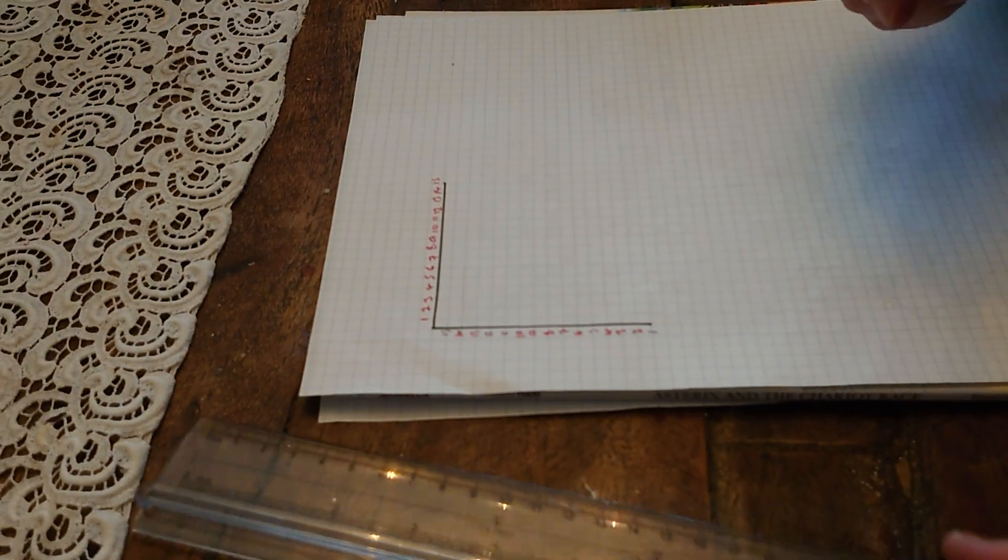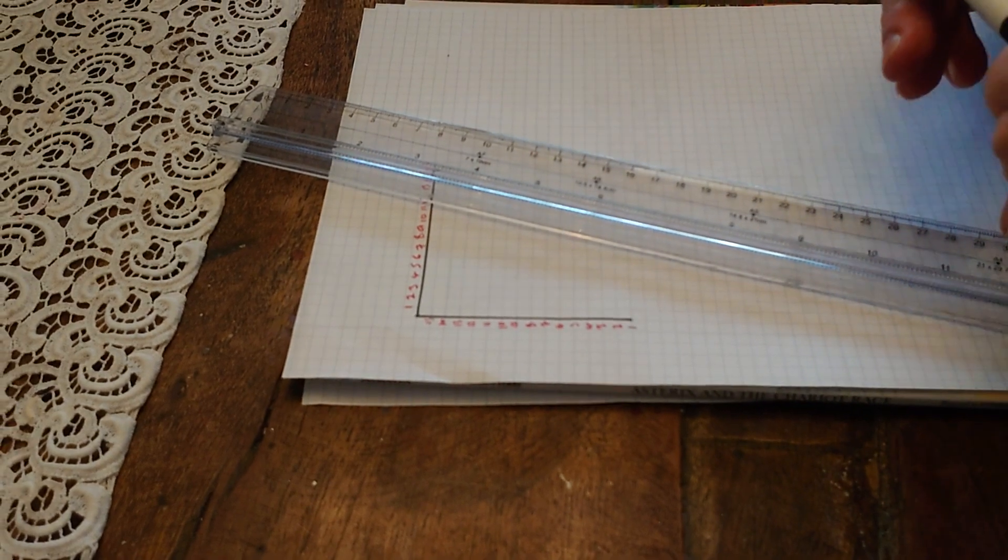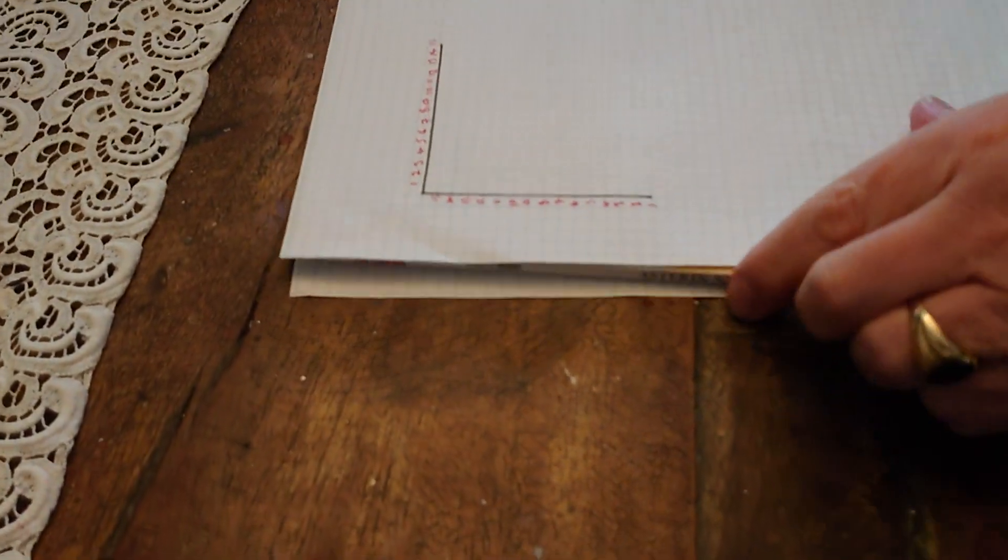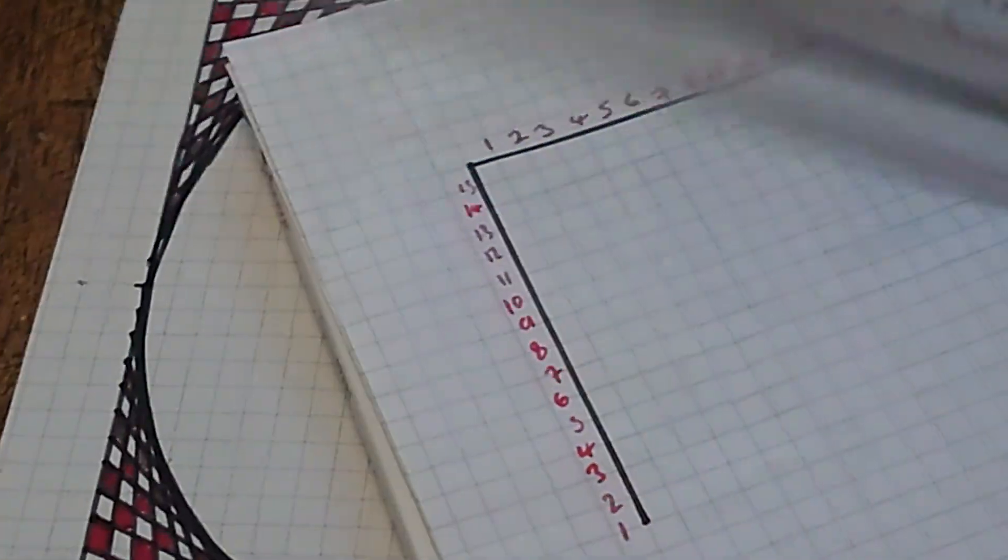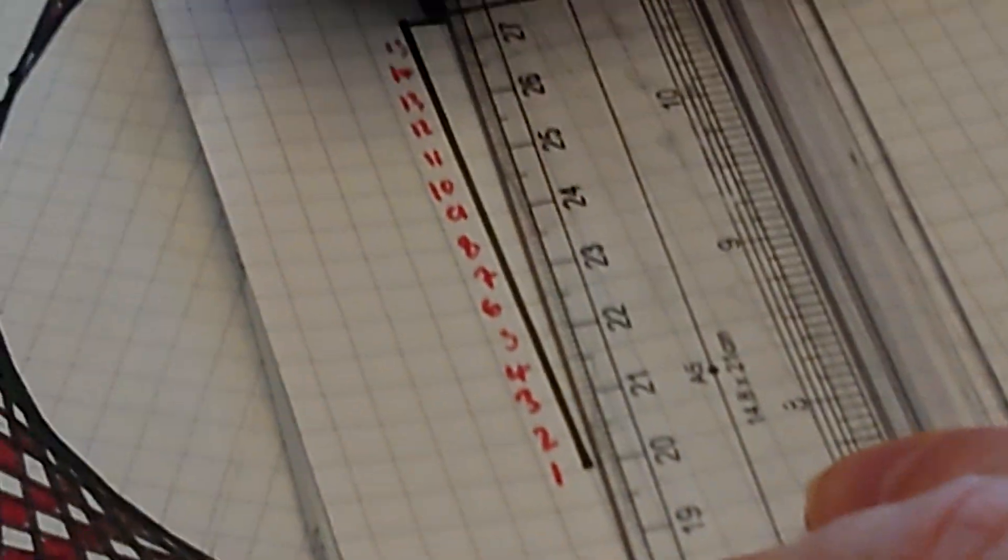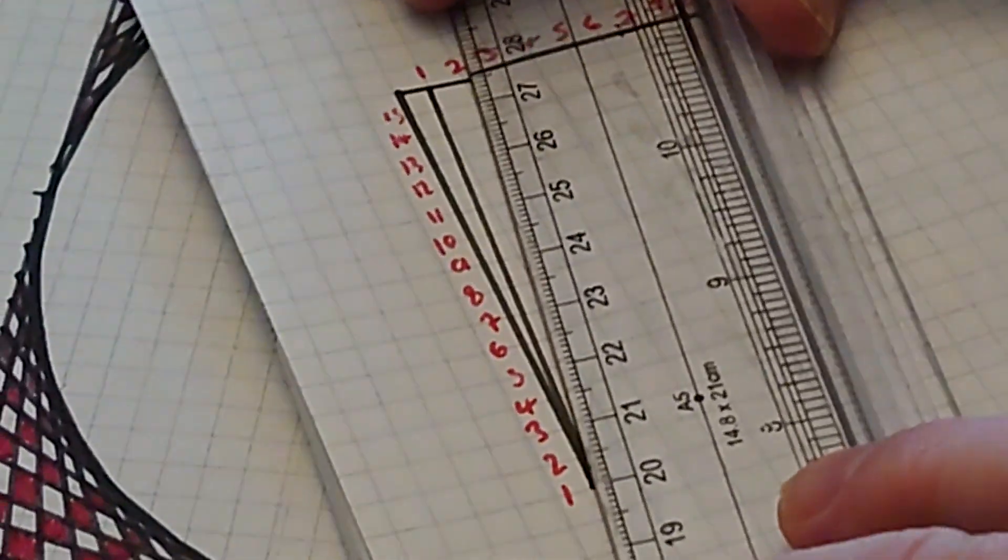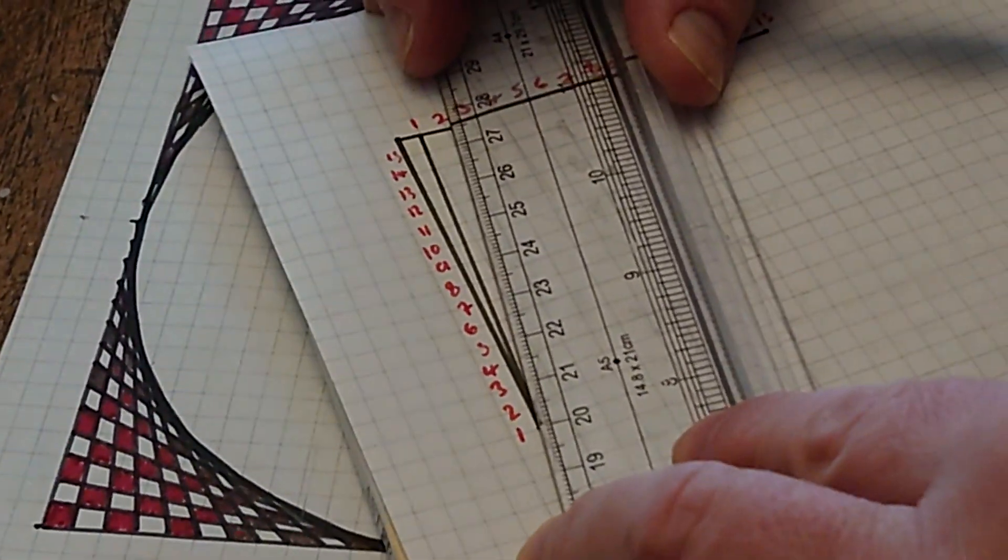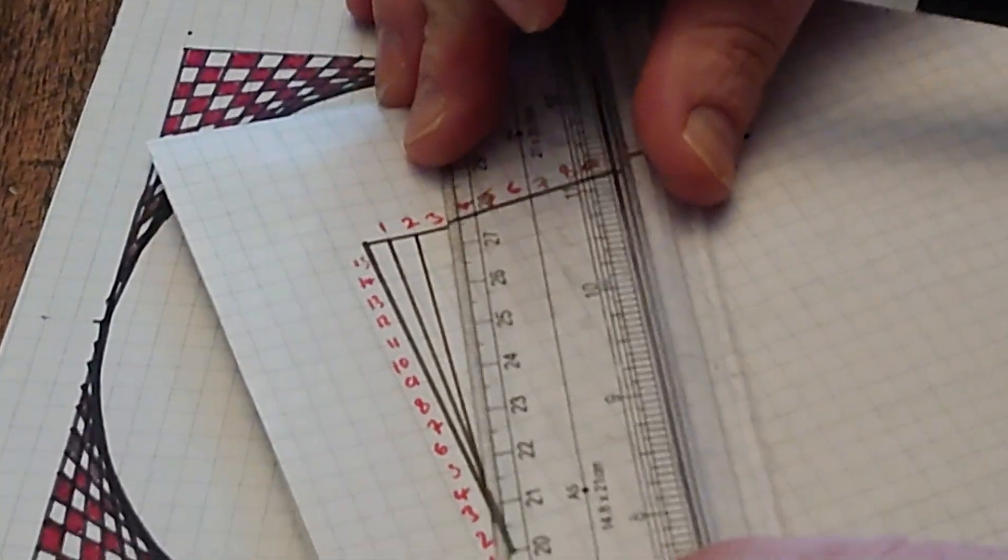What I'll do is start joining up the lines. So one to one. By the way, a clear ruler is best to use for these because you can actually see through. So you connect one to one, then move across to two and up to two, then three to three, then four to four.